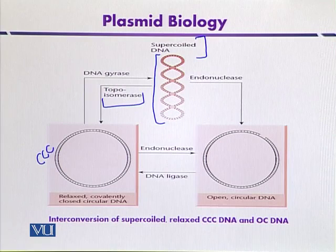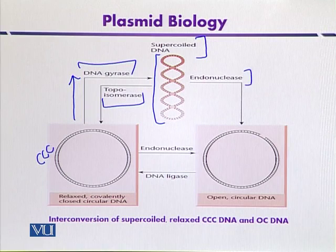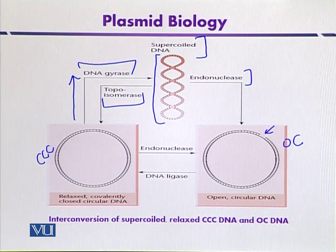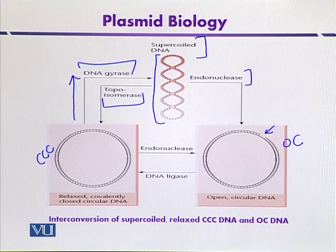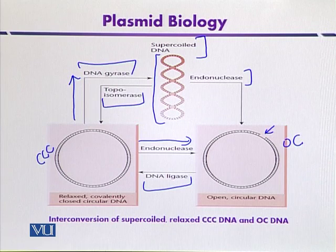If we want to convert CCC DNA back into supercoiled form, it can be treated with DNA gyrase, which introduces negative supercoiling. If we treat supercoiled DNA with endonucleases, OC DNA or open circle DNA is produced because one strand is not intact. OC DNA can be converted back into CCC DNA by repairing the nick with DNA ligase, and CCC DNA can again be converted into OC DNA by treatment with endonuclease.